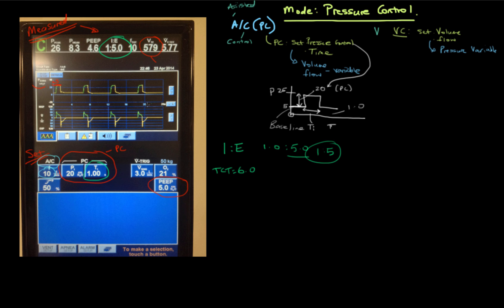One thing you may notice is that the peak pressure shown is 26, not 25. If you've got the concept down, you'd say: with 5 of PEEP and 20 of pressure control, shouldn't peak pressure be 25? Yes — and if you thought that, well done. The reason it shows 26 is that this system is hooked up to a test lung on a ventilator, so it's not completely accurate. In the next couple of videos we'll delve deeper into pressure control, but if you understand pressure-volume relationships, you can understand pressure control.